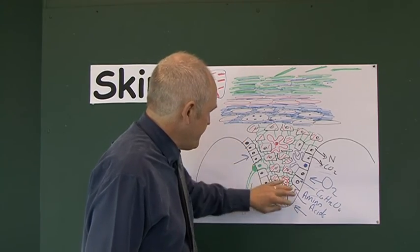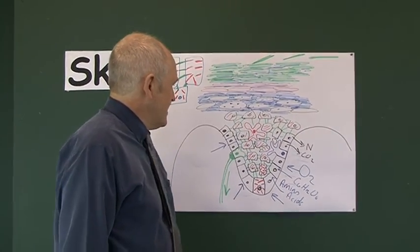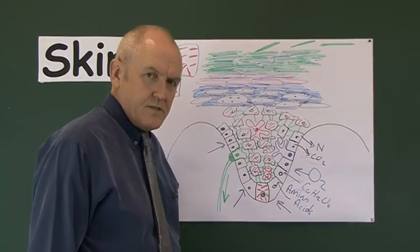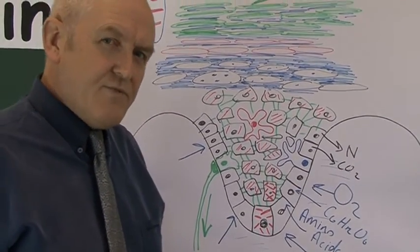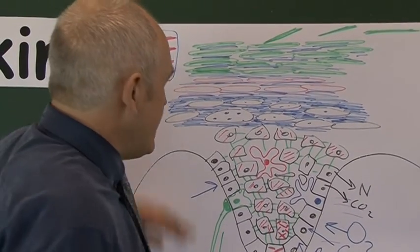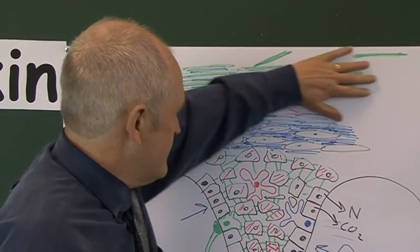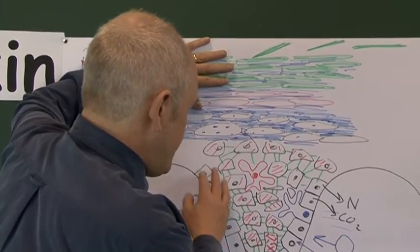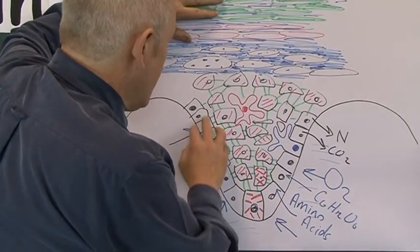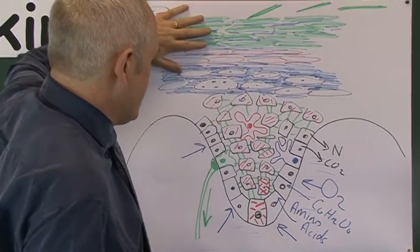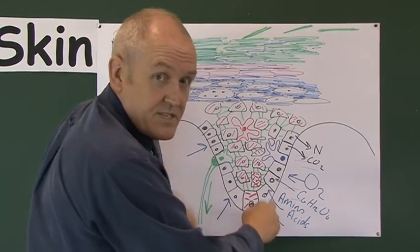The skin is constantly replaced and constantly regenerated as cells divide at the bottom, are pushed up through the layers, and eventually sloughed off at the top. This is the nature of the epidermis — and it's very clever, because if some of the top layer is lost, there's an epidermal growth factor involved, and the mitosis rate in the keratinocytes in the basal layer will increase.